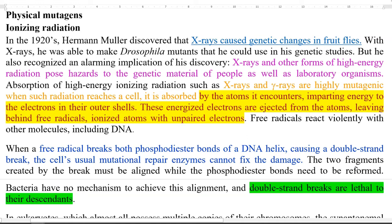Now we look in detail at ionizing radiation caused by X-rays and gamma rays. They are high energy radiation that produce various kinds of effects on genetic materials. They are highly mutagenic, and when such radiation reaches a cell, it is absorbed mainly by atoms present in the cell. They impart energy to electrons in their outer shells, and these energized electrons are ejected from atoms leaving behind free radicals.